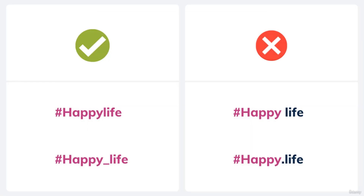Before going further into finding the right hashtags, we'll take a look at what qualifies as a hashtag and what doesn't — in other words, how to write a hashtag. On the screen, there are right ways to write a hashtag, denoted with a tick symbol, and wrong ways, denoted with an X or cross symbol. Using the phrase 'happy life' as an example: under the tick mark, I've written 'happylife' without any space, which is a right way to write a hashtag.